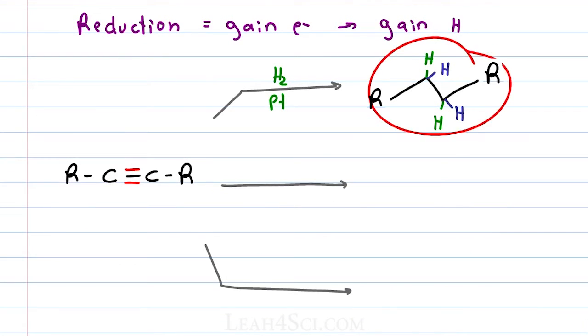This is the most that we can reduce an alkyne because we only had two pi bonds. But if we go with a partial reduction and only attack one pi bond, we have the option of forming a cis alkene or forming a trans alkene.